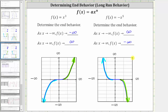Notice that both of these power functions have an odd degree. For f(x) = x³, a is positive, and for f(x) = -x⁵, a is negative. Whenever we have a power function with an odd degree and a is positive, this will always be the end behavior. When the degree is odd and a is negative, this will always be the end behavior.